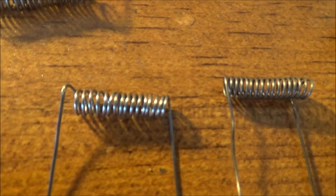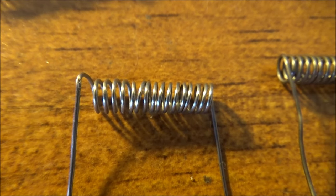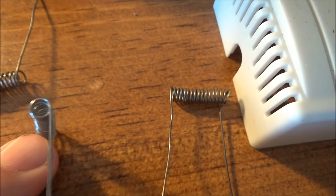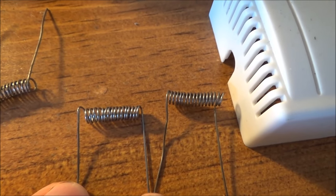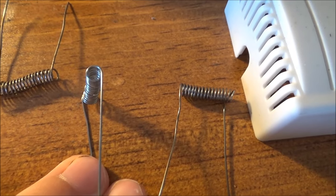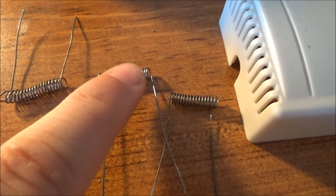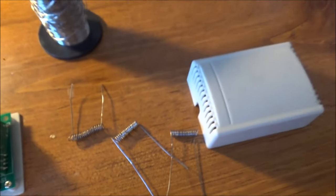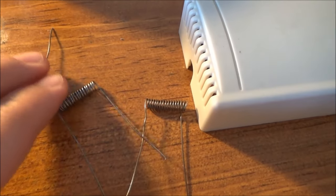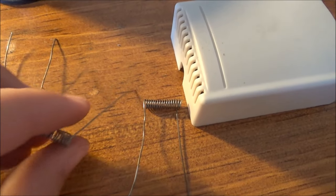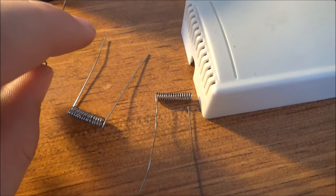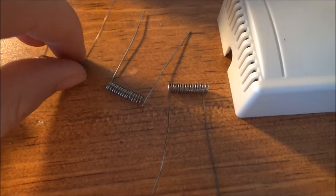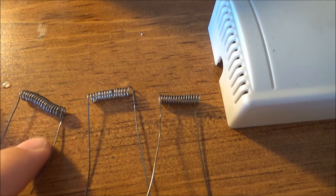And all these igniters really are is coils of that stuff. The great thing about these igniters is they're reusable quite a few times. You also don't have to prepare your fireworks in advance. All you have to do is slip this over the fuse. Hit the button, this stuff will glow red. It'll light the fuse up.